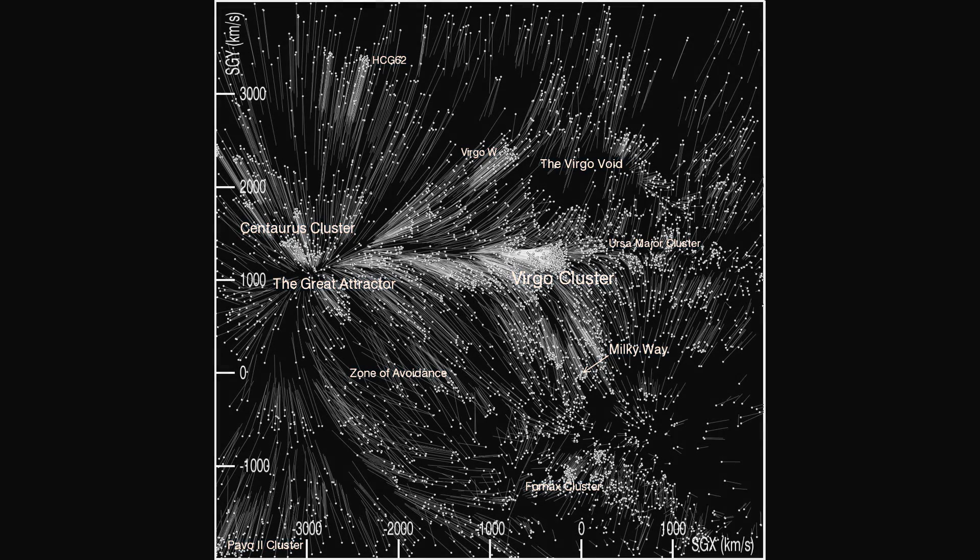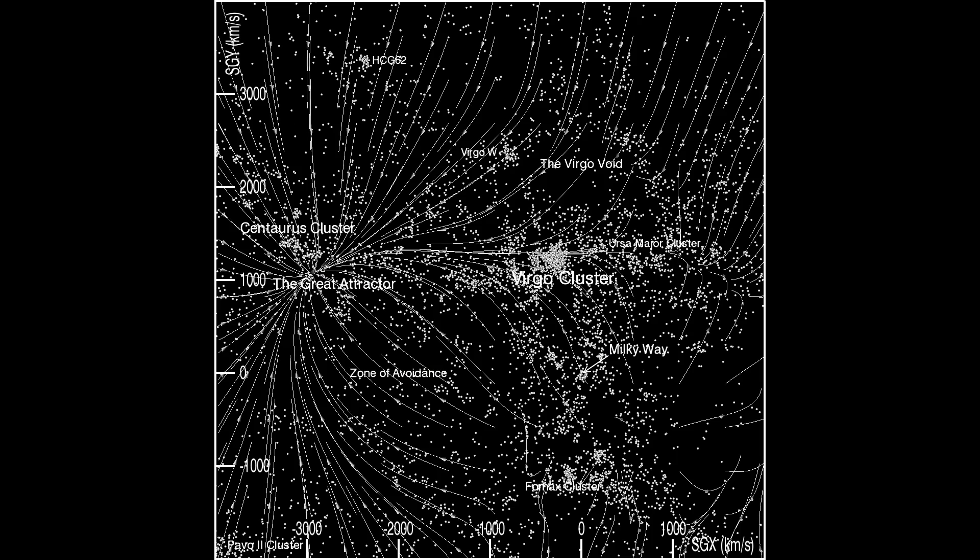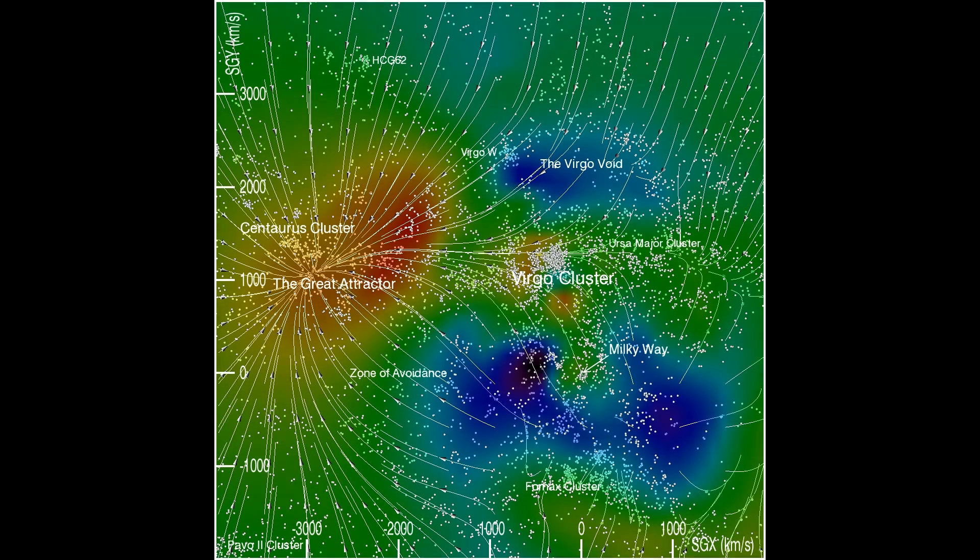Another transition replaces the individual vectors tied to galaxies with velocity flow lines and adds color to the background to represent the Wiener filter density field associated with the velocity pattern. High density regions are represented in red and voids are blue. We remark on the importance of the region around the Centaurus cluster.